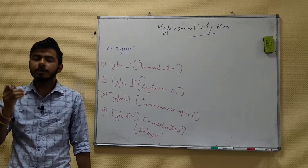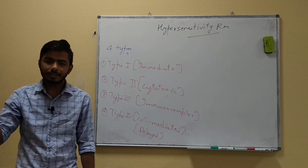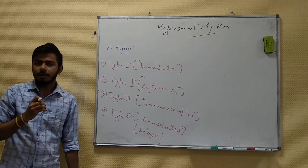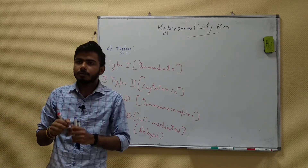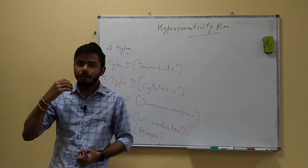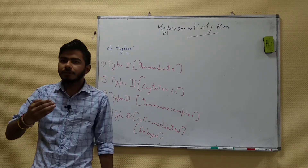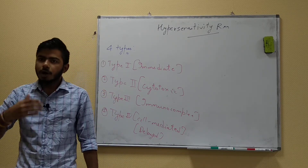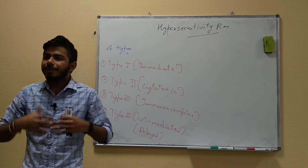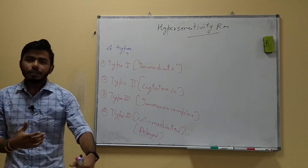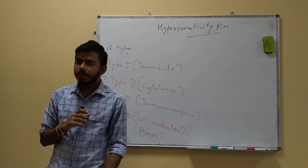Type 4 is also called delayed hypersensitivity. It takes about 48 hours to show its action. For example, the Mantoux tuberculin test used to diagnose tuberculosis is the classical example of type 4 hypersensitivity. Examples are very important because exam questions give you a scenario and you must identify which kind of hypersensitivity is involved.